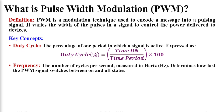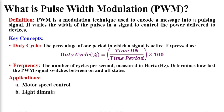Now the question will come to your mind: where are these signals used, or what are their applications? Basically, this technique is used to control the speed of motors, brightness of LEDs, signal generation, and also to modulate sounds coming to speakers.